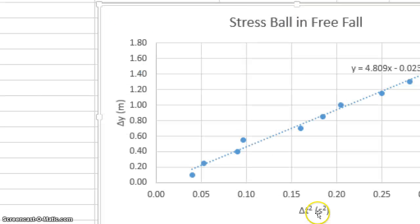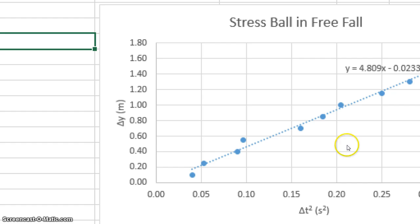Your graph has an x-axis label, a y-axis label, a graph title, and the equation is shown along with the trend line. And you see there's a slope there to the equation, 4.809 is my slope.